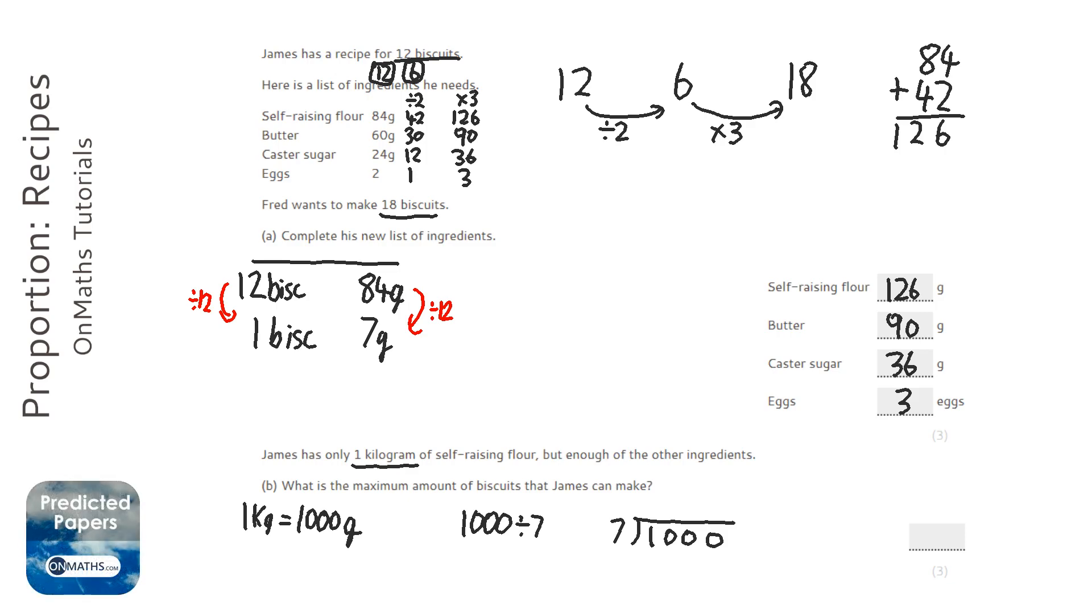Sevens into one don't go, so that one carries on. Sevens into ten go once and then we carry the three. Sevens into 30, well five times seven is 35 and four times seven is 28, so it's going to be four with two carried on. Sevens into 20, well seven times three is 21, seven times two is 14, so it's going to be two. Now we could carry on and push on the six remaining.